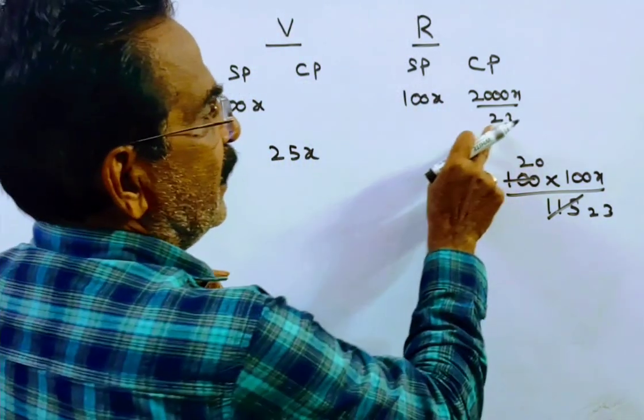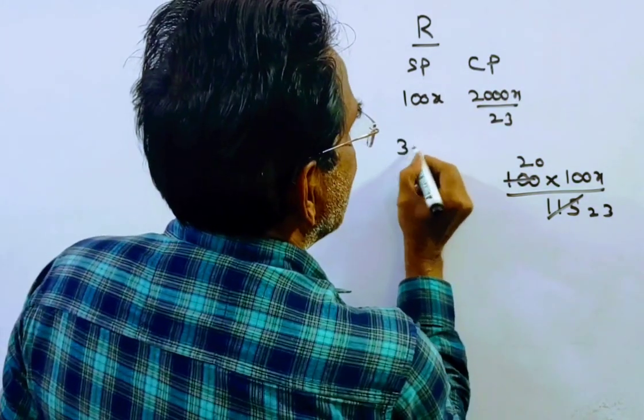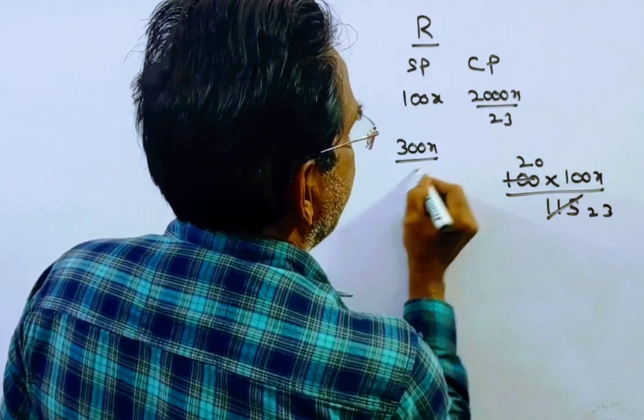The profit of Roshan is selling price minus cost price. That's 100x minus 2000x over 23, which equals 2300 minus 2000 over 23, giving us 300x over 23.